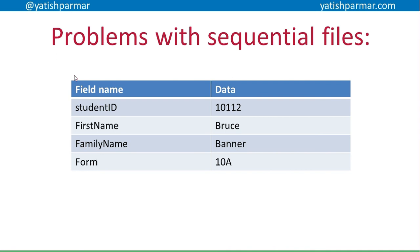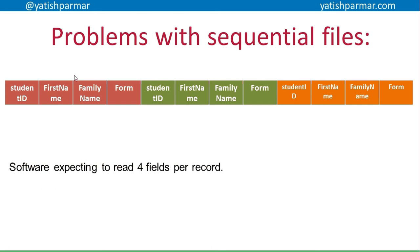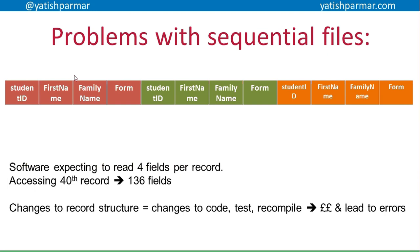Say for example this is a typical data structure being used: student ID, first name, family name — four fields per record. If I'm searching the sequential file, the software is expecting to read four fields per record. So if I want to access the third record, it has to go through eight fields first. To access the 40th record, the program goes through 136 fields before reaching that record.